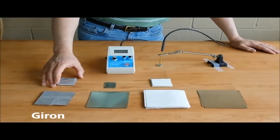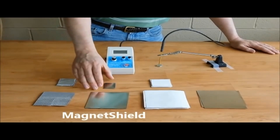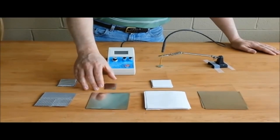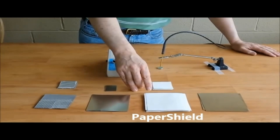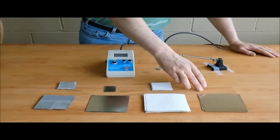This first material here is called gyron. This one here is magnet shield. This one with the white paper on it is called paper shield. And this last one is mu metal.